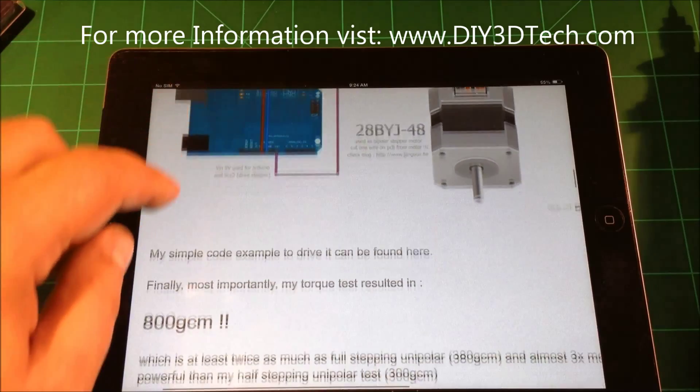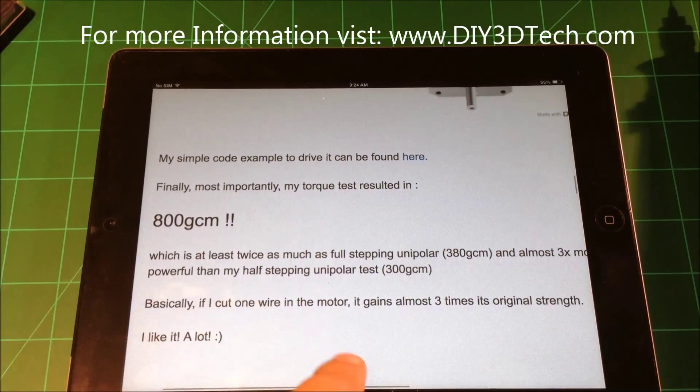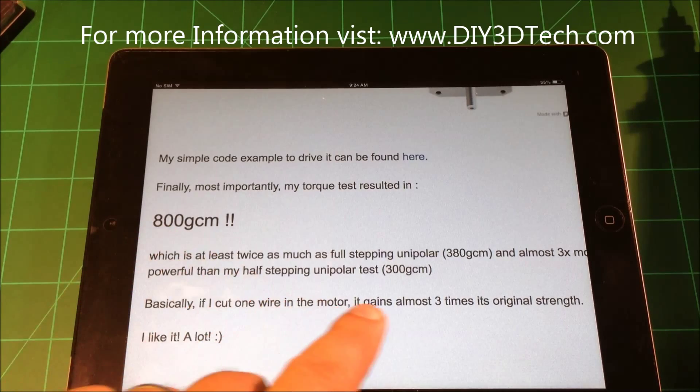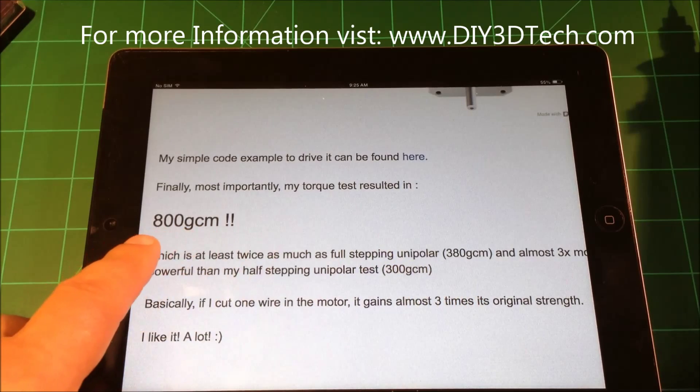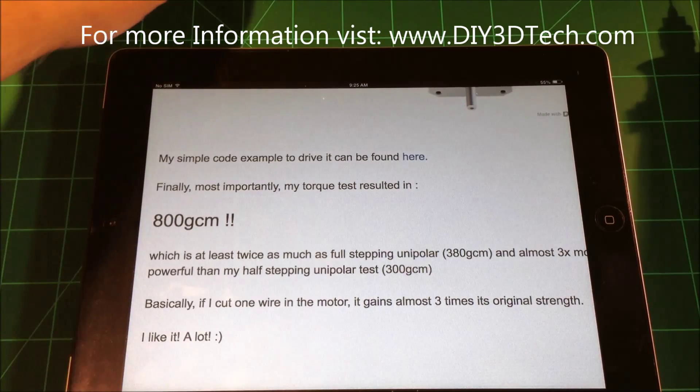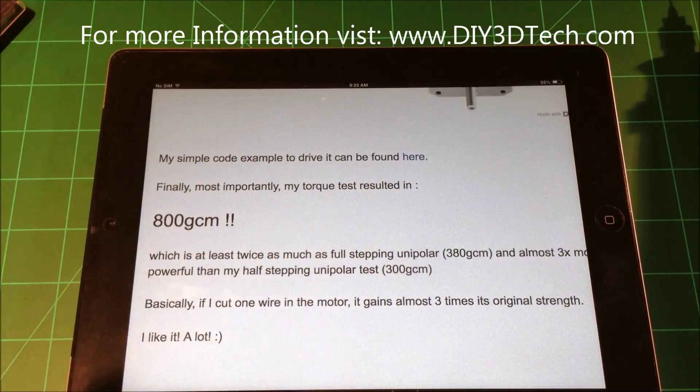Basically what it says is he's gone from making this modification from about 380 grams per centimeter to 800 grams per centimeter, roughly almost a three fold, about 2.5 fold increase in power from this little motor.